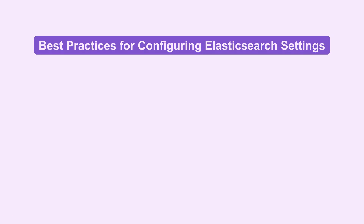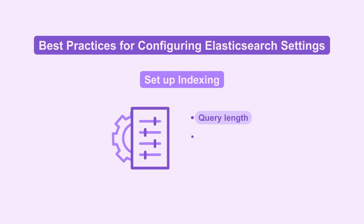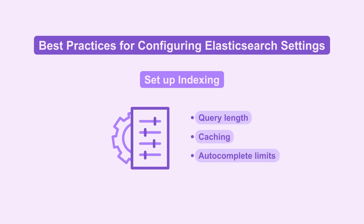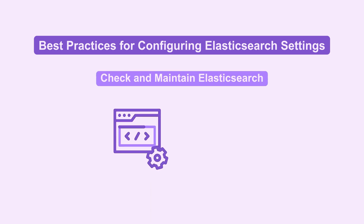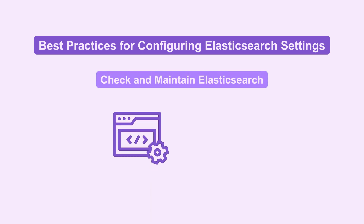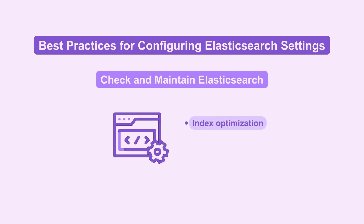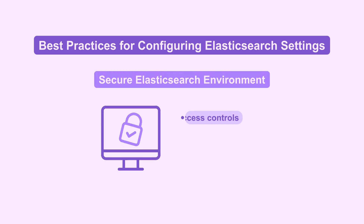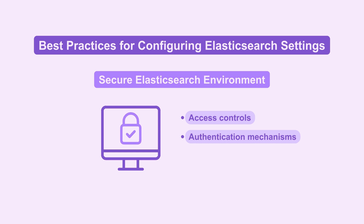Next, let's discuss best practices for configuring Elasticsearch. Adjust settings like query length, caching, and autocomplete limits for efficient performance. Regularly check performance metrics and conduct maintenance tasks like index optimization and shard management. Implement access controls, authentication mechanisms, and encryption to protect your data.